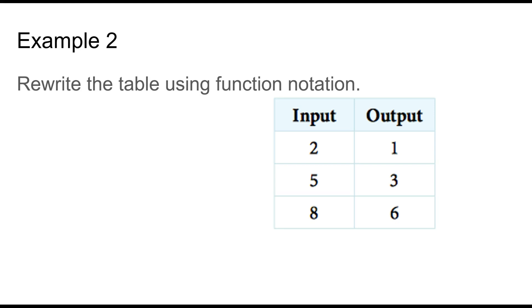Rewrite the table using function notation. So the input is 2, so f of 2 is equal to 1. f of 5 is equal to 3, and f of 8 is equal to 6. A couple more examples together, and then you'll try alone.